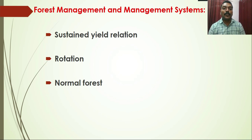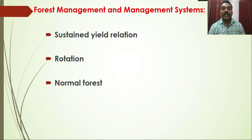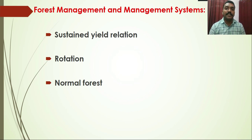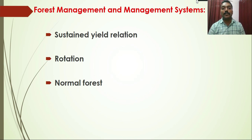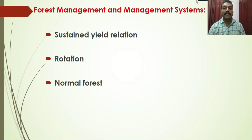How this sustainable yield is achieved in any given forest area will be dealt with in detail in this chapter. Rotation is another important aspect of forest management — it is the age at which the crops are harvested. Every forest or plantation is managed with various objectives, so the rotation used in any given forest area also varies. It depends on the species and objectives such as maximizing timber, fuel load, or other parameters. There are five to six types of rotation which will be covered.